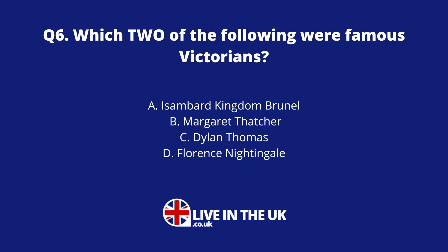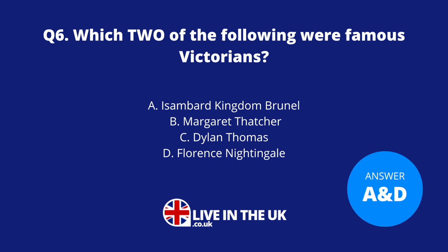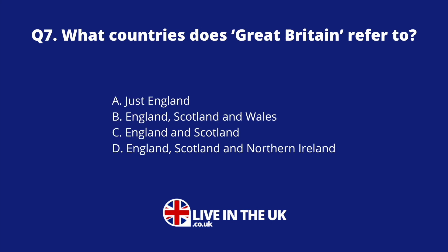Question six: Which two of the following were famous Victorians? A. Isambard Kingdom Brunel. B. Margaret Thatcher. C. Dylan Thomas. D. Florence Nightingale. The answers are A and D. Isambard Kingdom Brunel was a very famous engineer during the Victorian period, and Florence Nightingale is associated with modern nursing.